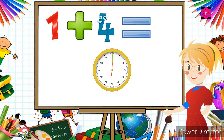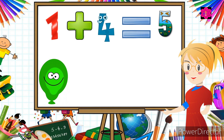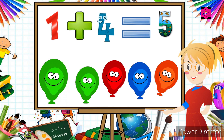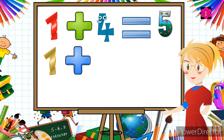Now the next question: one plus four is equal to...? One balloon — now we add four more balloons. Now we count: one, two, three, four, five. One plus four is equal to five. Now the next question.